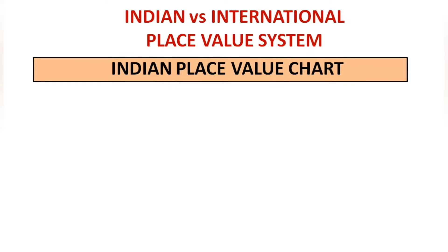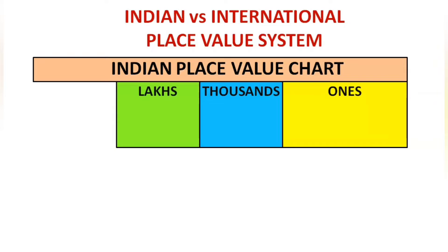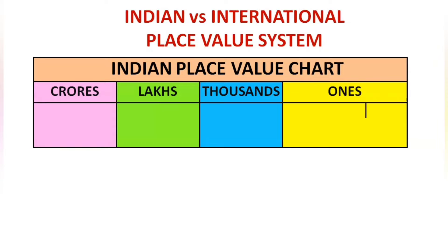In the Indian place value chart, from the extreme right side, we have the periods: ones, thousands, lakhs, and crores. These periods are divided into places. The ones period is divided into three places: ones, tens, and hundreds.